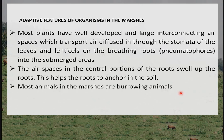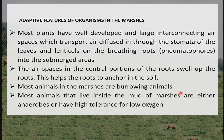Most animals in the marsh are burrowing animals. Most animals that live inside the mud of marshes are either anaerobes or have high tolerance of low oxygen — they can undergo respiration in the absence of oxygen or tolerate small amounts of oxygen. A food chain in a marsh would show grasses, then grasshopper as primary consumer, then crocodile as tertiary consumer. In a detritus food chain: detritus as producer, worms as primary consumer, fishes as secondary consumer, and man as tertiary consumer.